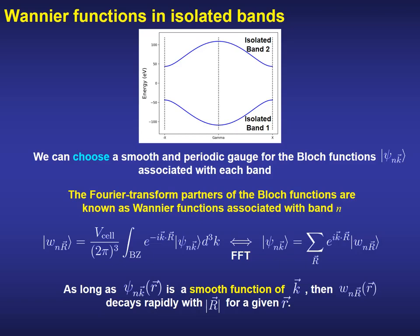Up to now, we have focused on the band structure, that means on the eigenvalues of the Hamiltonian. But what about if we pay attention to the eigenstates? Then, if we choose a smooth and periodic gauge for the Bloch functions associated with a given band n, and then perform the same Fourier transform as before, we arrive to the Wannier functions associated with that particular band. Again, as it happens for the eigenvalues, if the Bloch functions are smooth in reciprocal space, then the Wannier functions will decay rapidly in real space. It can be proved how this decay depends on the band gap of the material, from exponential in insulators to algebraic in metals.